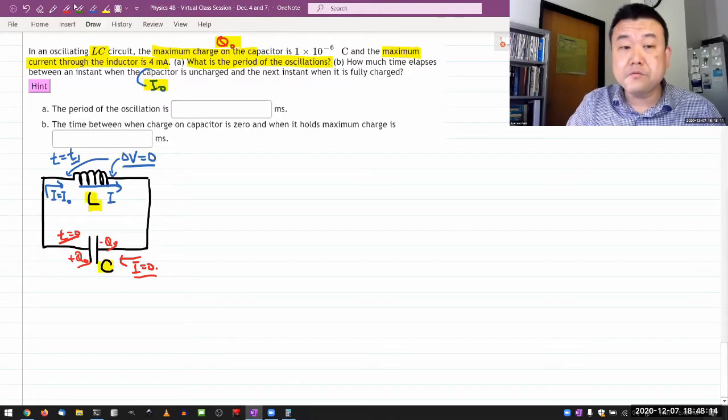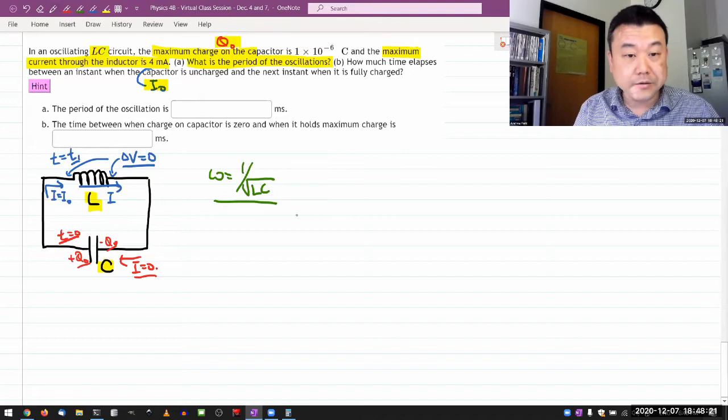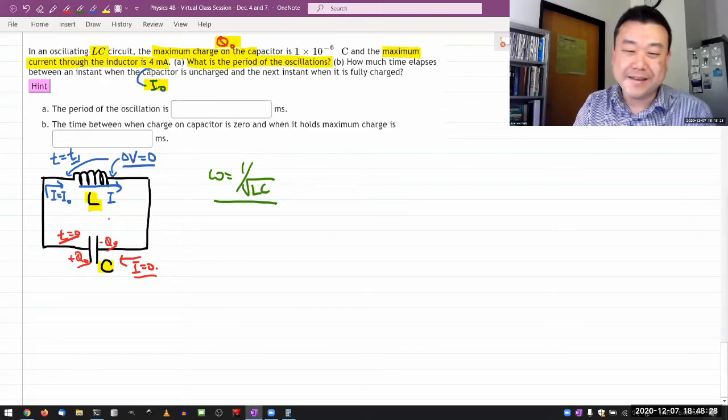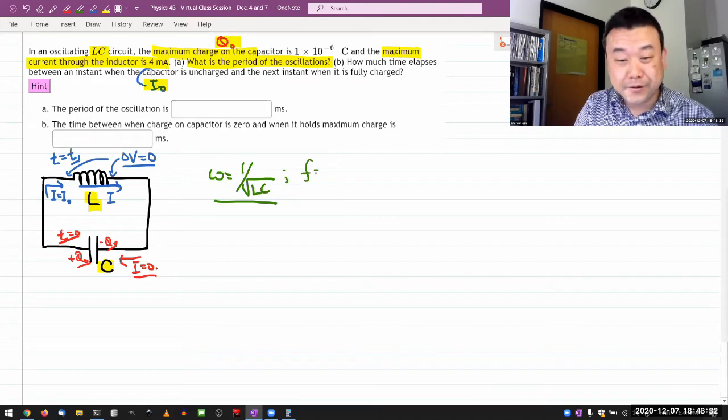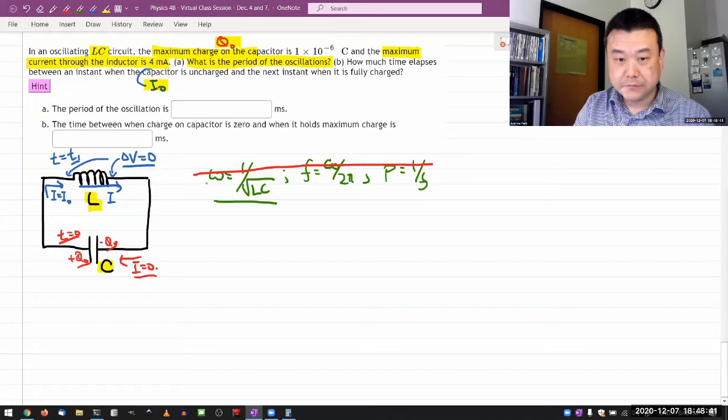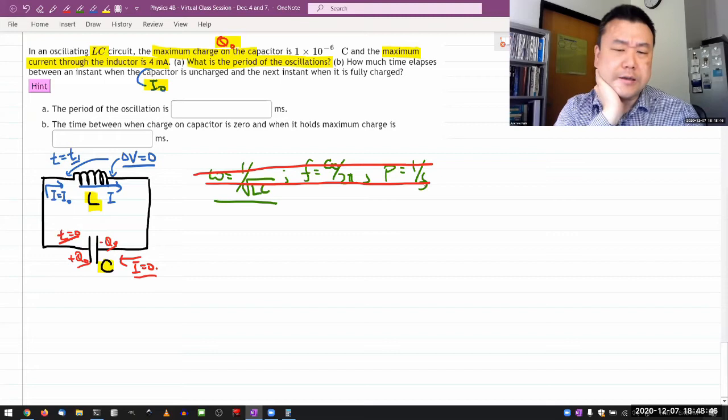So you might be remembering this formula, omega is equal to one over root LC. And what I'll tell you is that that's not useful right now, because I'm not given L or C. So this and the other formula, frequency is omega over two pi, and that the period is one over frequency, all of these not useful. So I'm going to have to try something else to figure out the frequency of oscillation.